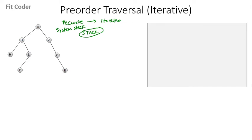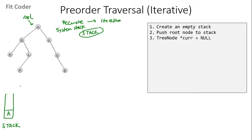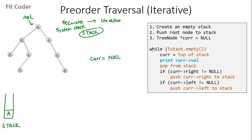So the first step of the algorithm is we need to create an empty stack. Then the second step is we push the root node to the stack — A is the root node of this tree, so we push A to the stack. Then the third step is we create a pointer called current which we initialize to null.